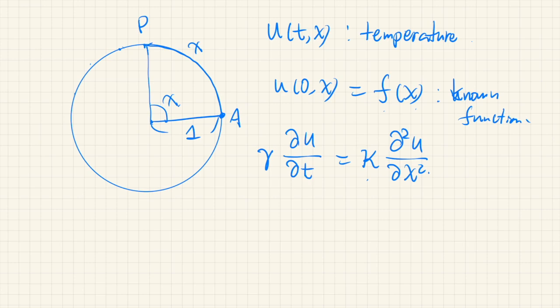where kappa here is another constant, that's the thermal conductivity via cross-section of the wire. And both gamma and kappa, they are positive constants.